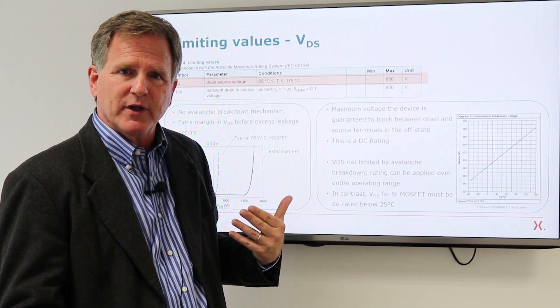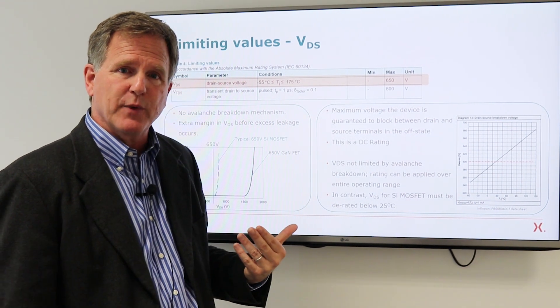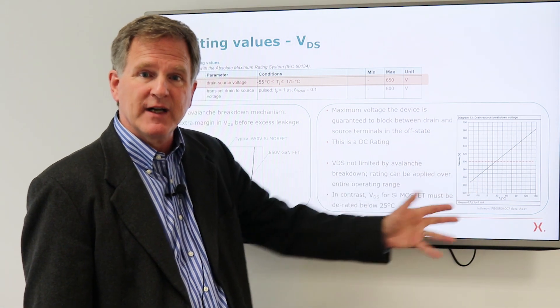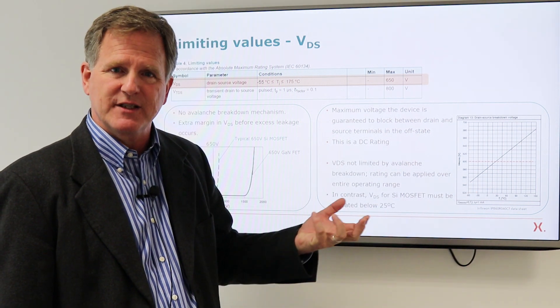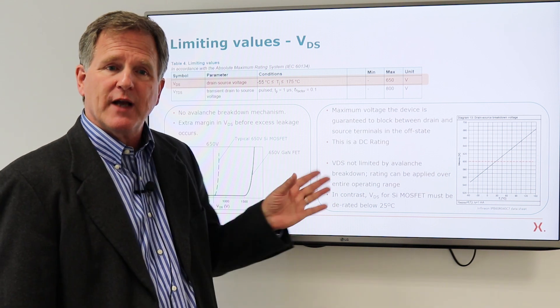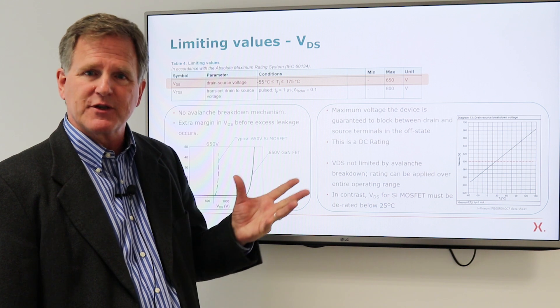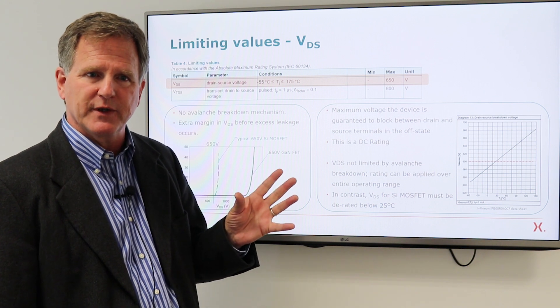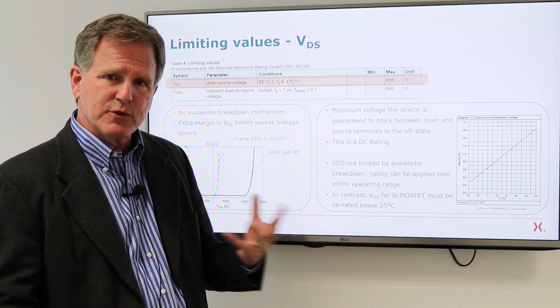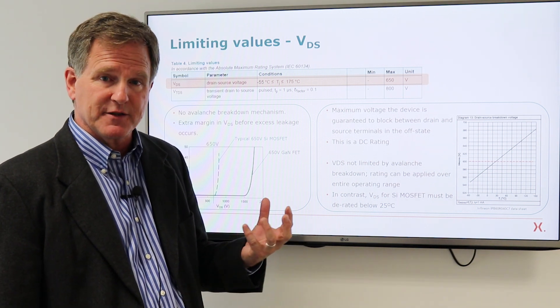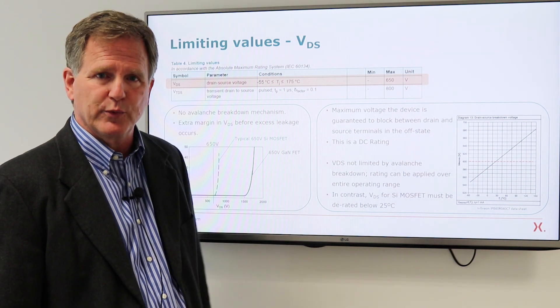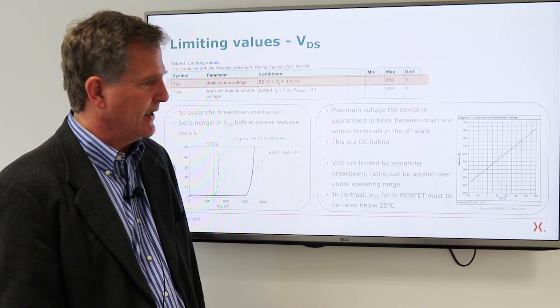Well since we have no avalanche breakdown, our VDS rating applies over the entire temperature range. So minus 55 to plus 125, 650 volts is the DC rating of this device. And I would also say you don't have to de-rate based on cosmic radiation. That's something some engineers are aware of and concerned with, that they should apply a de-rating factor. Again, that's associated with an avalanche breakdown mechanism. Since there is none, there's no reason to de-rate the device. 650 volts really is a voltage it can operate at.